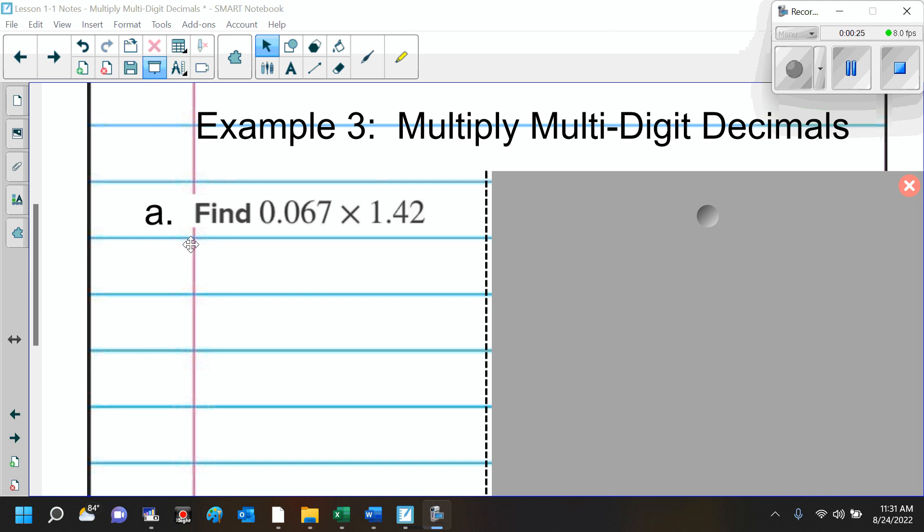Here we have the first example. Example 3a is 67 thousandths times 1 and 42 hundredths. Now, I cannot multiply when I'm looking at it like that. That's too hard for me to do. So I want to make sure that when I'm doing a multiplication problem, I want to write it vertically.